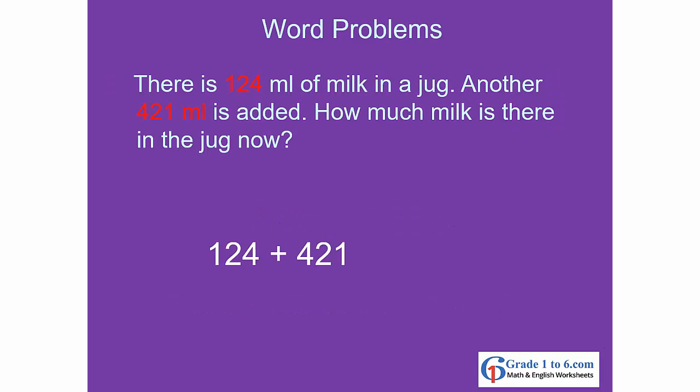1.24 ml of milk — another 4.21 ml is added. How much milk is there in total? 1.24 plus 4.21 gives you 5.45 ml.